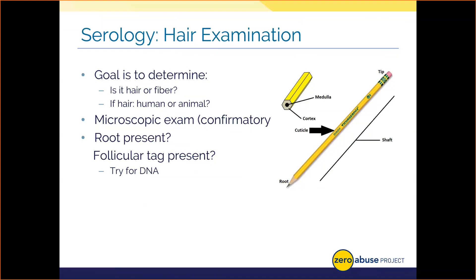Features indicative of human hair: the cuticle will have an imbricate pattern — which looks like cracked paint — and the cortex will have an even color unless the individual dyed their hair. Coloration is typically darker towards the cuticle, though redheads can be an exception with darker coloration sometimes towards the medulla. The medulla in humans is either amorphous — like a solid or broken line — or totally absent, and the medullary index should be equal to or less than one-third of the shaft diameter, indicating the medulla is small.